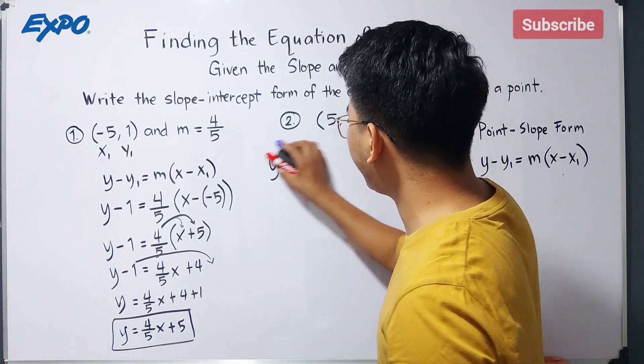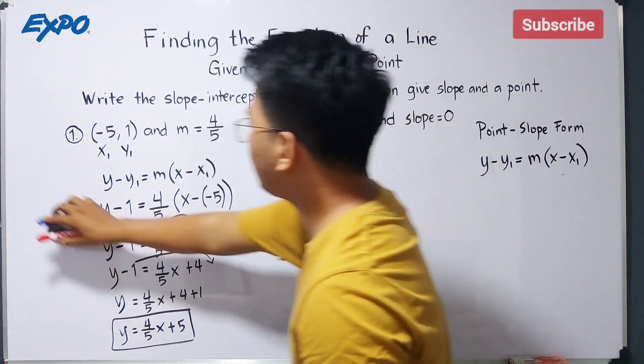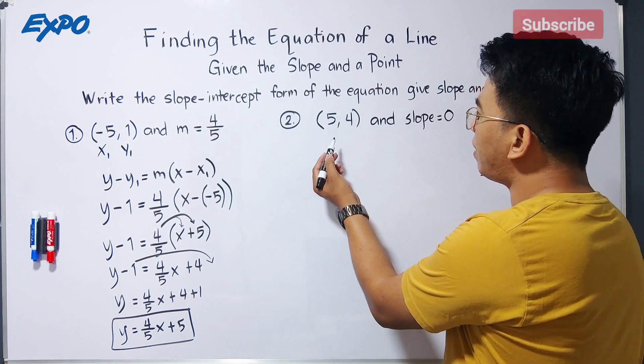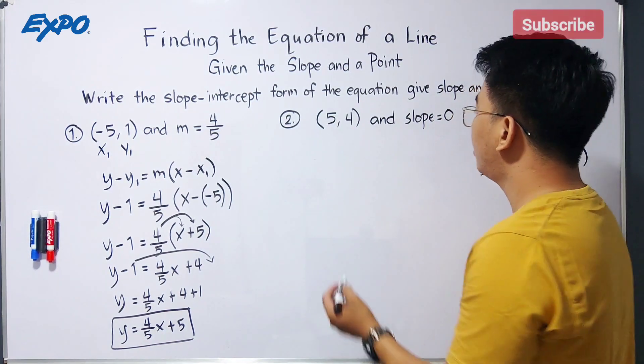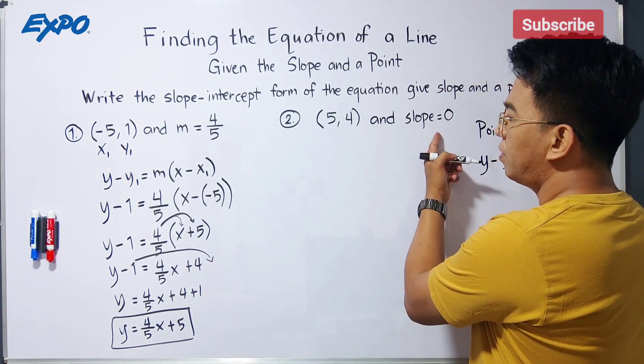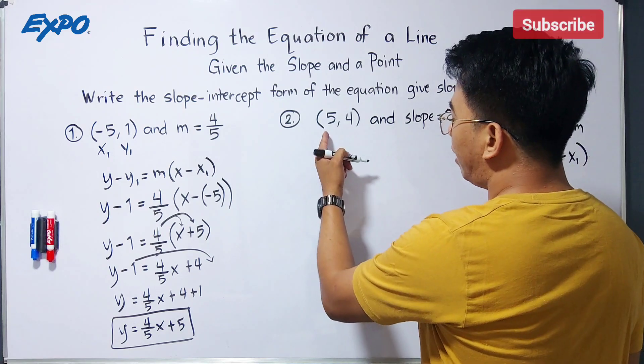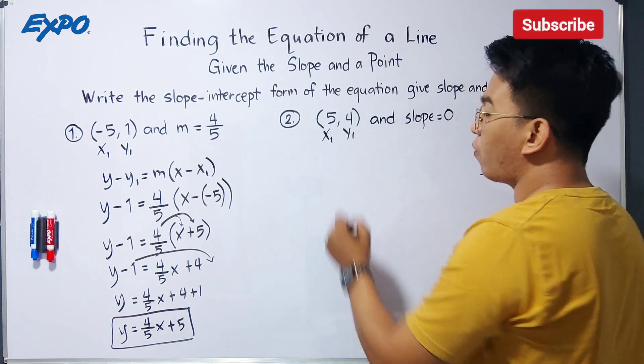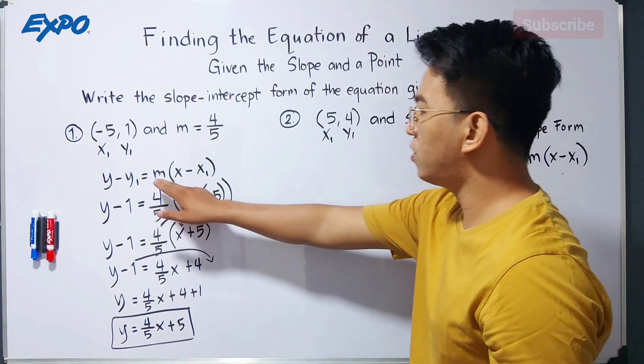So let's move on with item number 2. For item number 2, what we have here is this. We are given a point, which is 5, 4. And the slope is 0. So label it first as x sub 1, and this is our y sub 1.